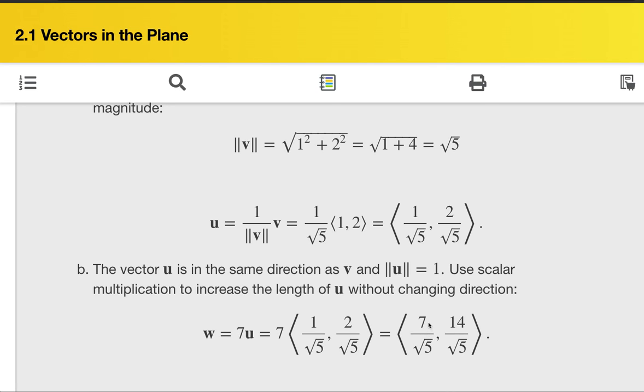So, simply, we are having a new vector, which is 7 over square root of 5 and 14 over square root of 5. This is the vector in the same direction as v, but the norm is 7. The norm is 7.